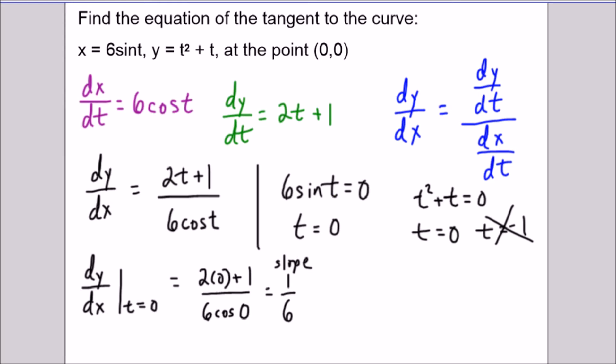So then to write our equation and close this question out, just know the general form of line is y equals mx + b and in this case the slope is one over six. We have our x and our y-intercept is zero since it's passing through the point (0,0) here.